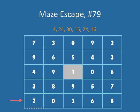At the top of this box of numbers are the products. These are all the products that you need to make in order to find your way out of the maze. And you have to make these products in order: 4, 24, 30, 15, 24, and 16. Let's get going.